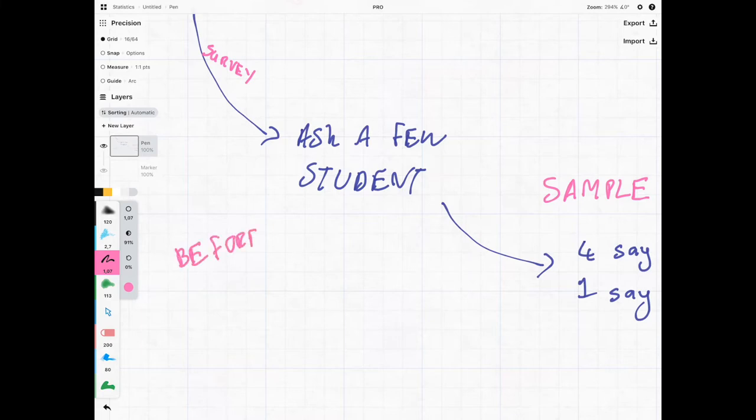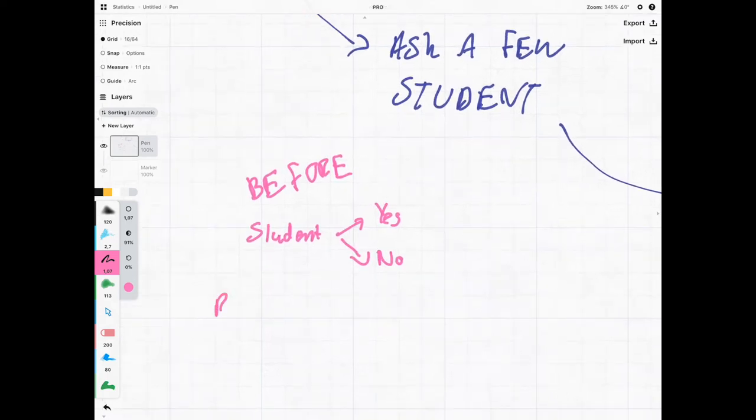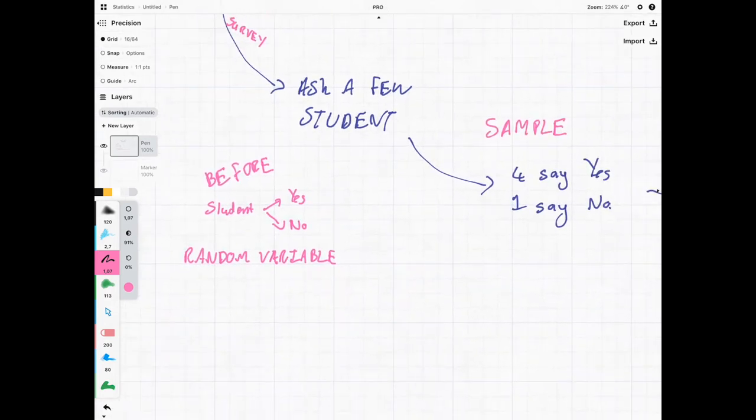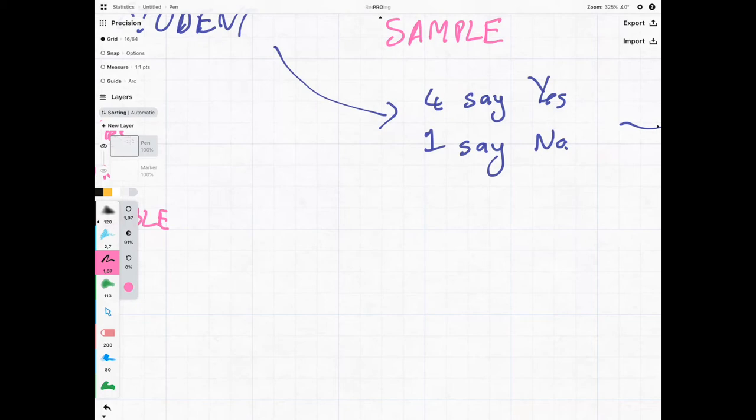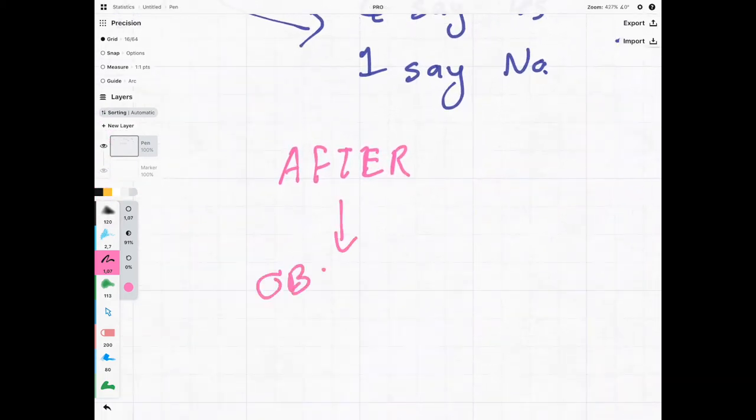Before we ask the student whether they want to go to the party or not, whether they think the party is a good idea, so before we ask them the question, the student can either be yes or no. And because it can be either one of these things, it's known as a random variable. Think of the student almost as a coin before you toss it.